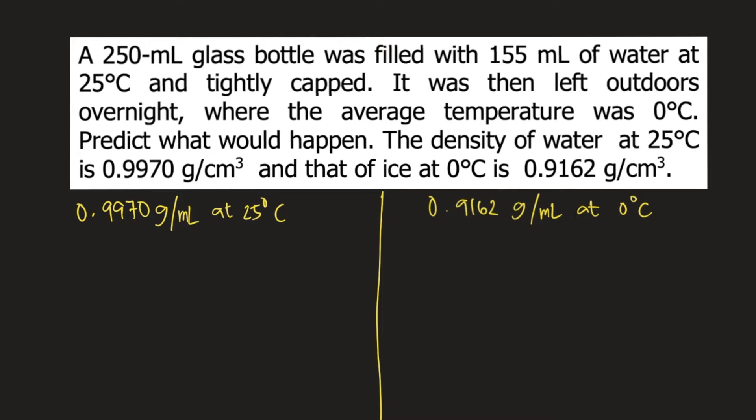So in the problem, it says we have 155 ml of water at 25 degrees Celsius. So that is liquid water. What we need to do is convert this into grams. How many grams of water is 155 ml? We need to use the density.